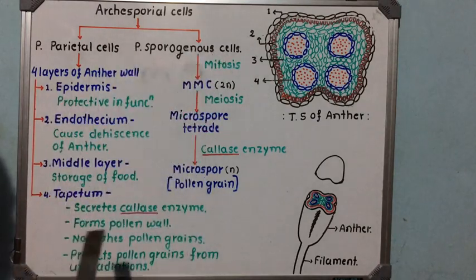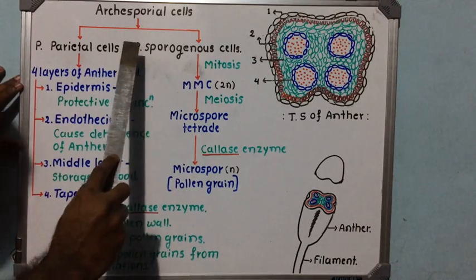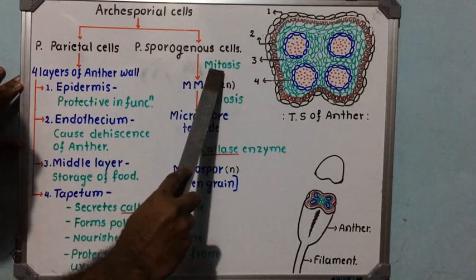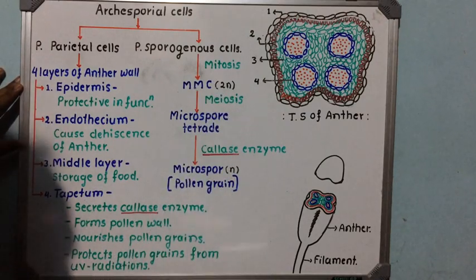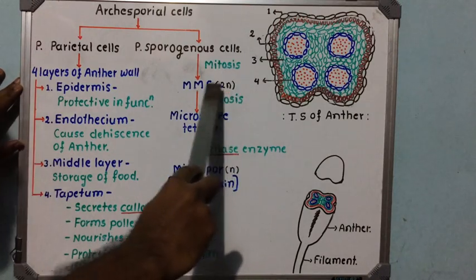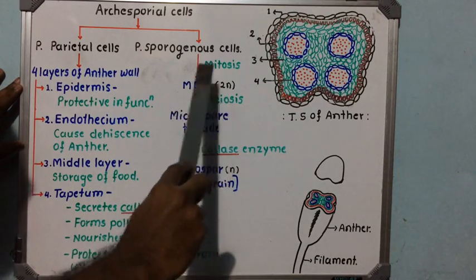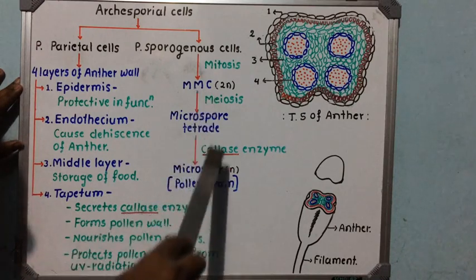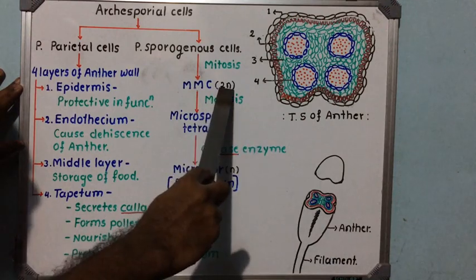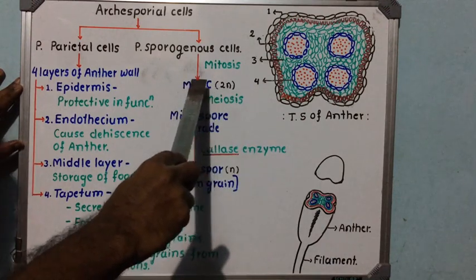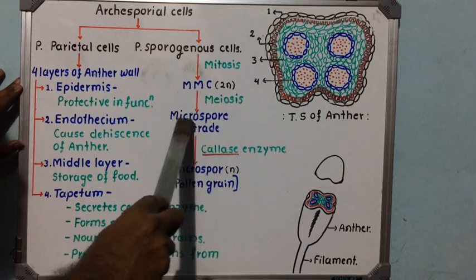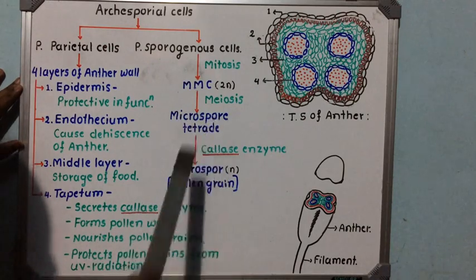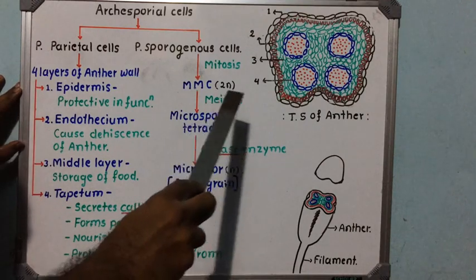The primary sporogenous cells undergo mitosis and produce specialized diploid cells. These specialized diploid cells have the capacity to give birth to microspores or pollen grains, which is why they are known as microspore mother cells or pollen mother cells. These diploid microspore mother cells then undergo meiosis and form haploid cells called microspores or pollen grains.